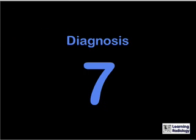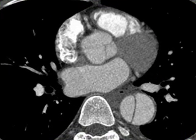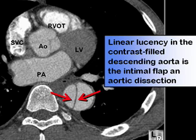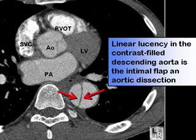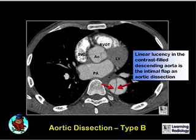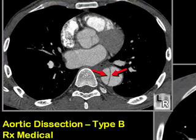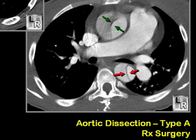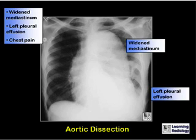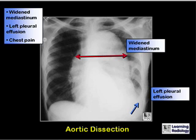This is Diagnosis 7. Why does this 63-year-old man have chest pain? This is a single image from a contrast-enhanced CT scan of the chest. There is a thin lucency in the contrast-filled descending aorta, representing the intimal flap of an aortic dissection — this is a Type B dissection. Type B dissections spare the ascending aorta and are usually treated medically. Type A dissections involve the ascending aorta and are usually treated surgically. On conventional radiography, signs suggesting dissection include a widened mediastinum and a left pleural effusion, especially with chest pain.